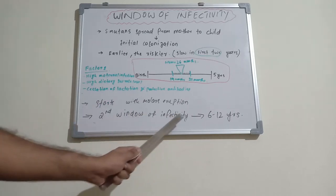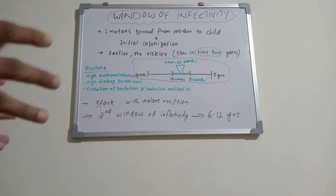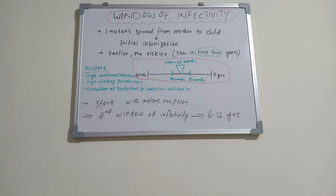The second window of infectivity is seen between 6 to 12 years. At this period, the child's mouth is undergoing mixed dentition period. There are lots of teeth, deciduous and permanent teeth, and there is transient malocclusion phase. So the bacteria has lots of favorable conditions to get colonized.